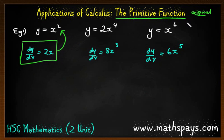So what's going to happen, the actual question will be the derivative function, or the gradient function, and they're going to ask you to find the primitive function, which means the original function. Now they might also use the word as the anti-derivative, okay?